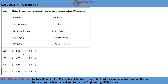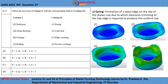Let me briefly explain each defect and to which forming process it is related. Earring is a formation of a wavy edge on the top of a drawn cup, due to which excessive trimming of the top edge is required to produce a uniform top. Earring is the defect associated with deep drawing.